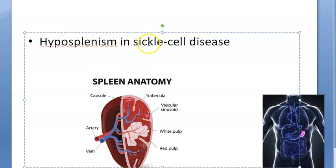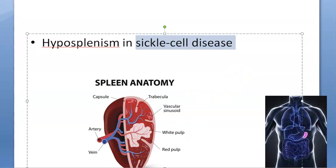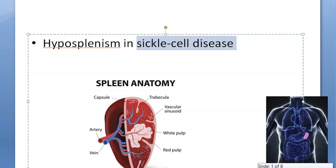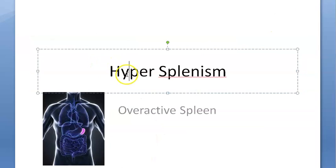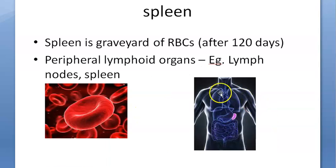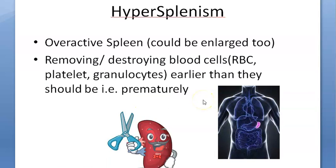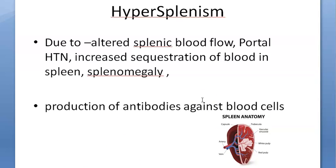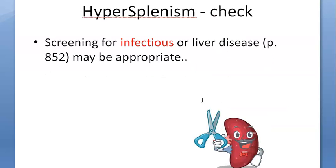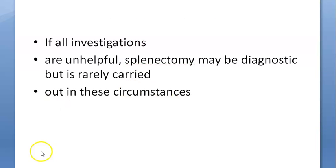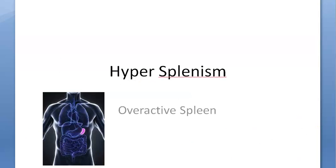There is also a related term called hyposplenism — an underactive spleen — which can be seen in sickle cell disease. In this video we focused on hypersplenism: what the spleen does, what hypersplenism is, why it happens, what it leads to, and how to treat it.